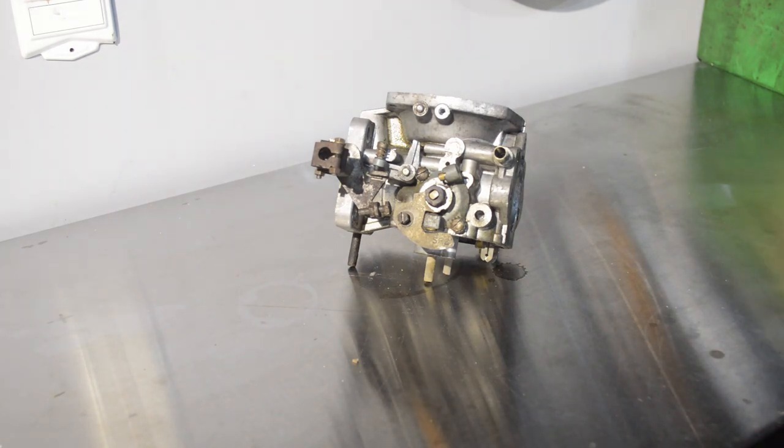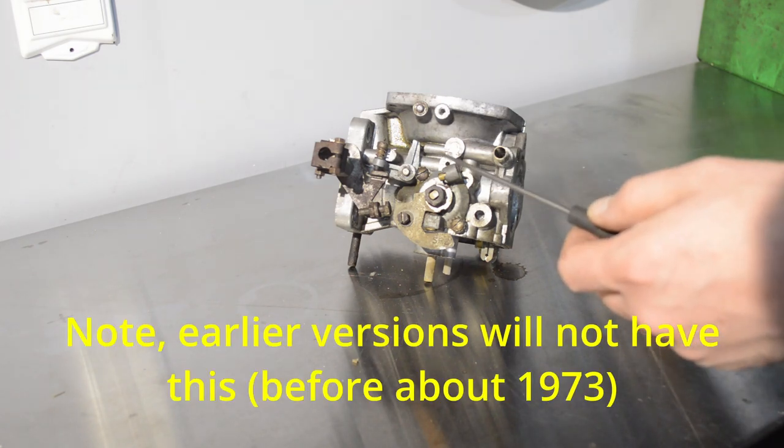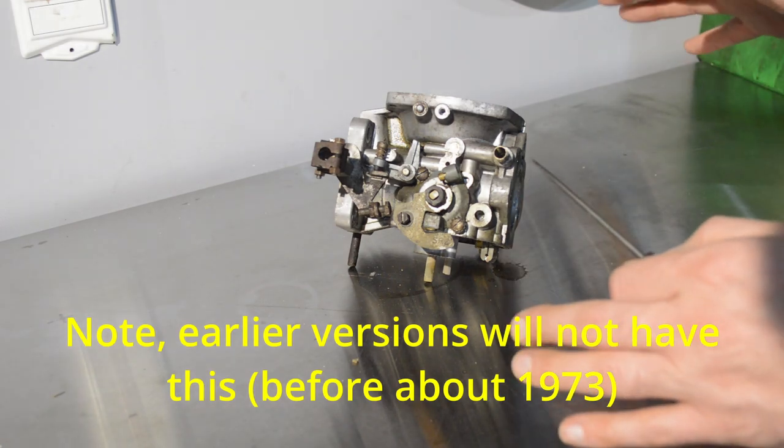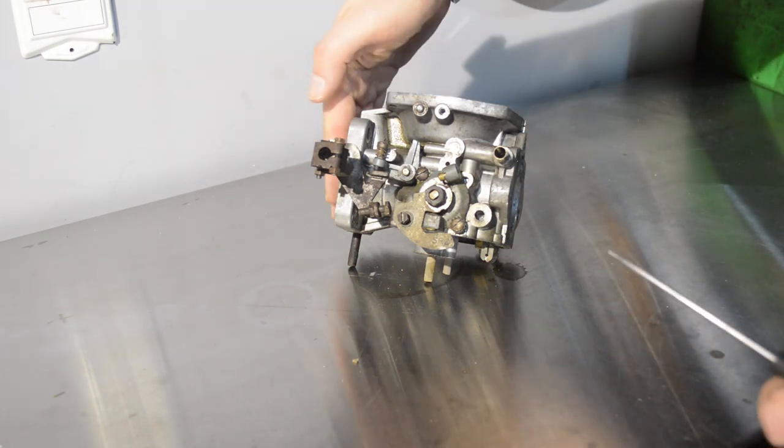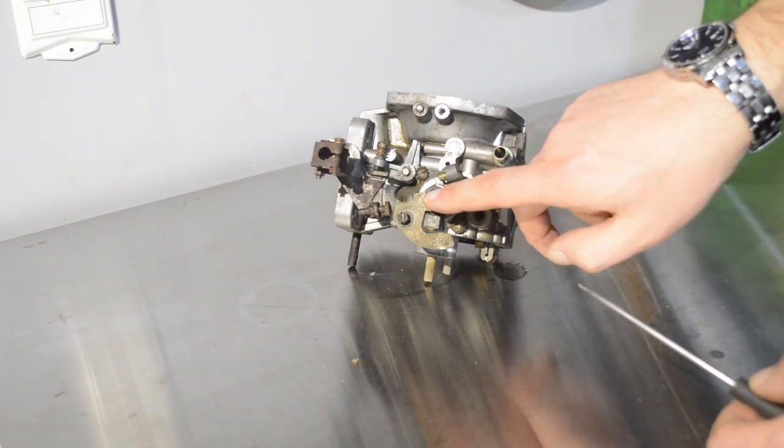Okay everybody, welcome back to the channel. What we're going to talk about today, just very briefly, is this port here on the side of a Zenith Stromberg carburetor. So it's partially taken apart here, but if you can imagine, this is the side that attaches to the manifold. Over here is where you're going to have the air cleaner.